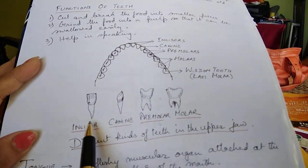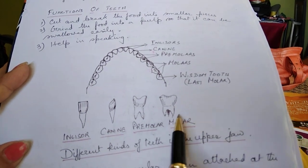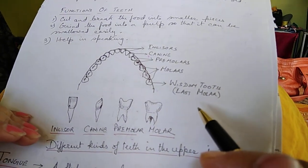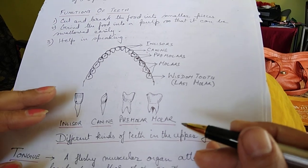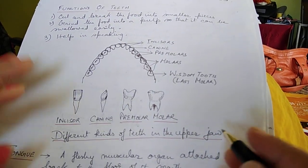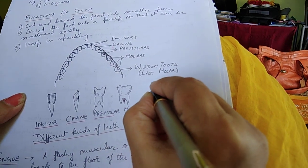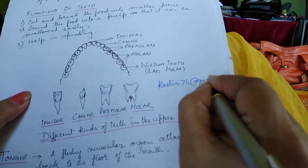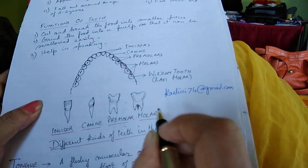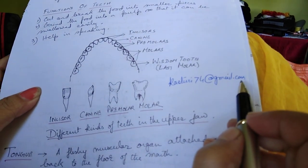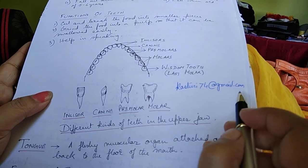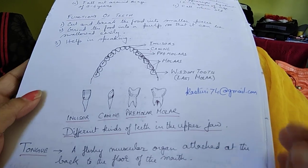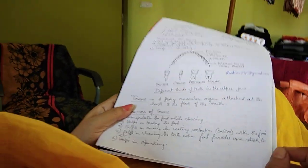We can see the incisor, canine, premolar, and molar in the diagram. That ends the teeth portion. The next video will cover the tongue. For any queries, contact via email: kasturi74@gmail.com. Please subscribe — thank you.